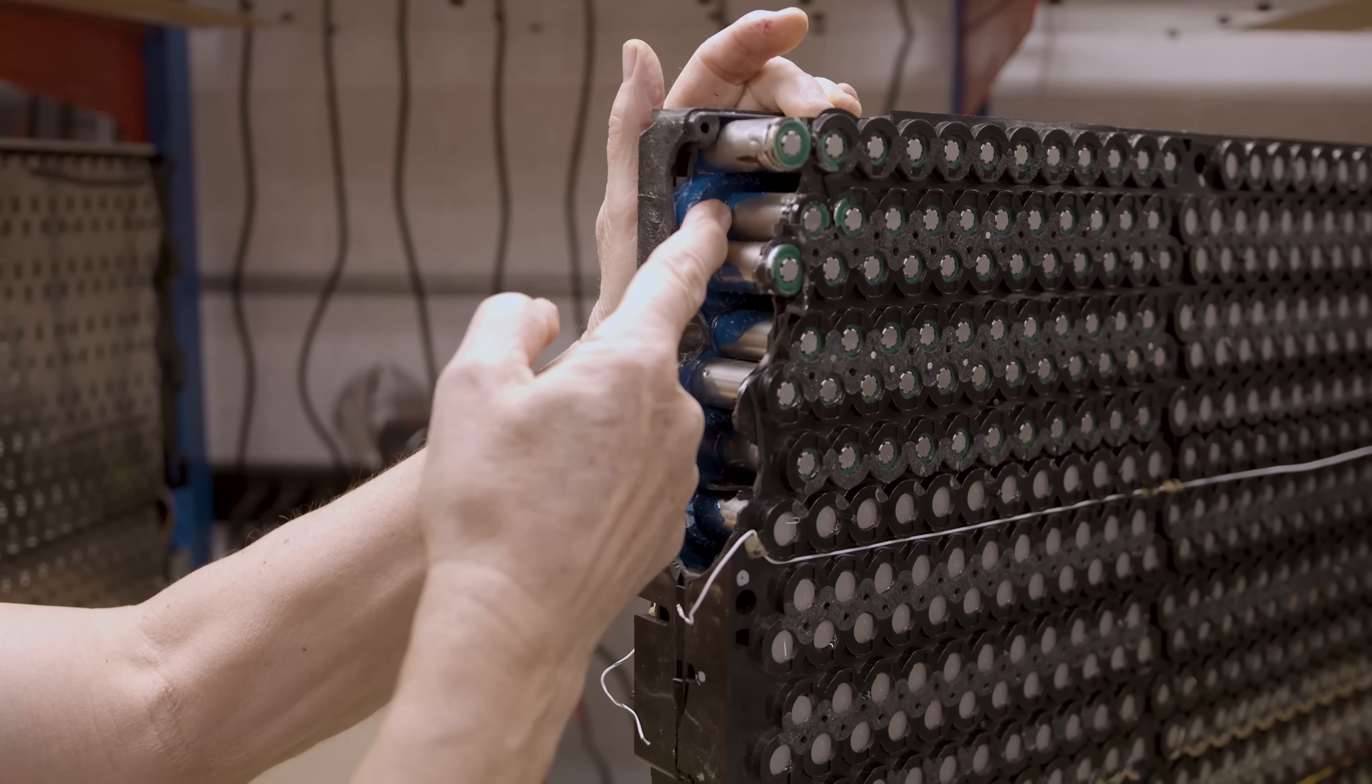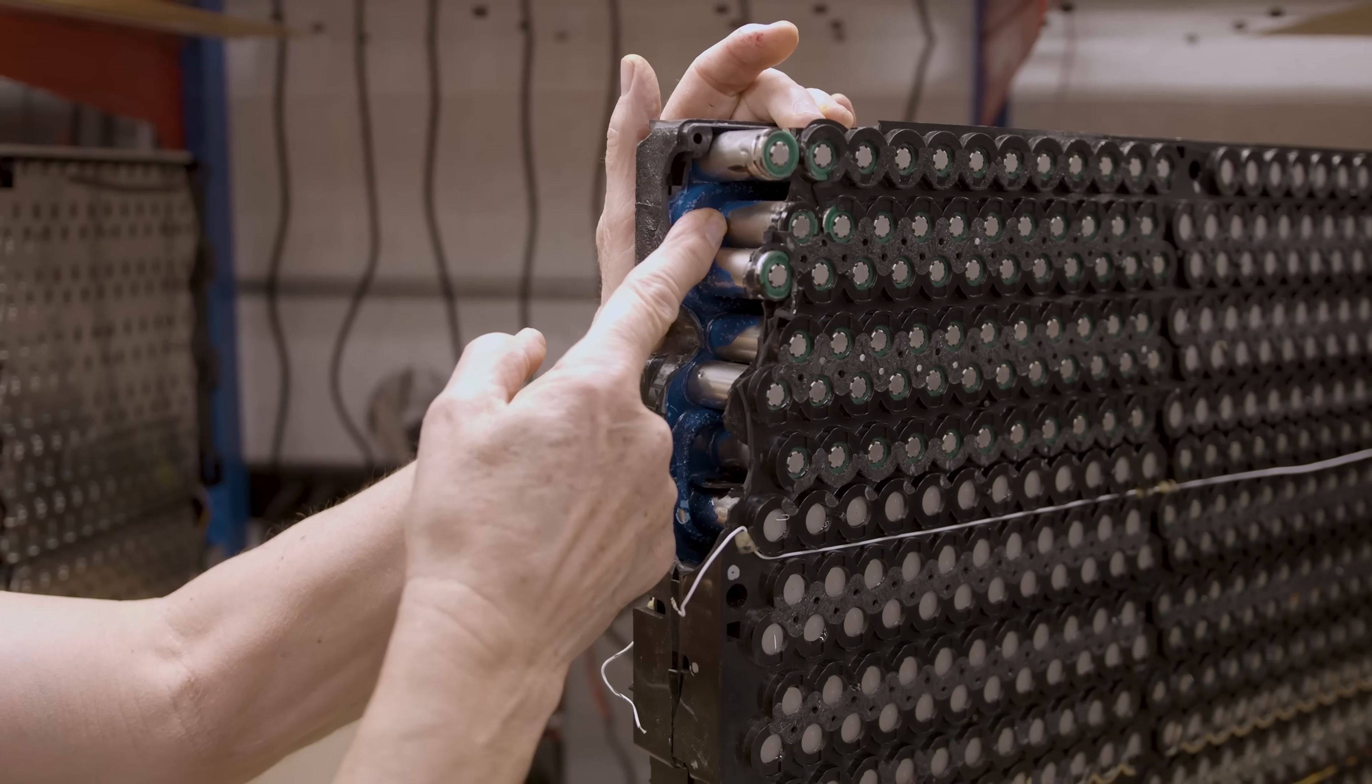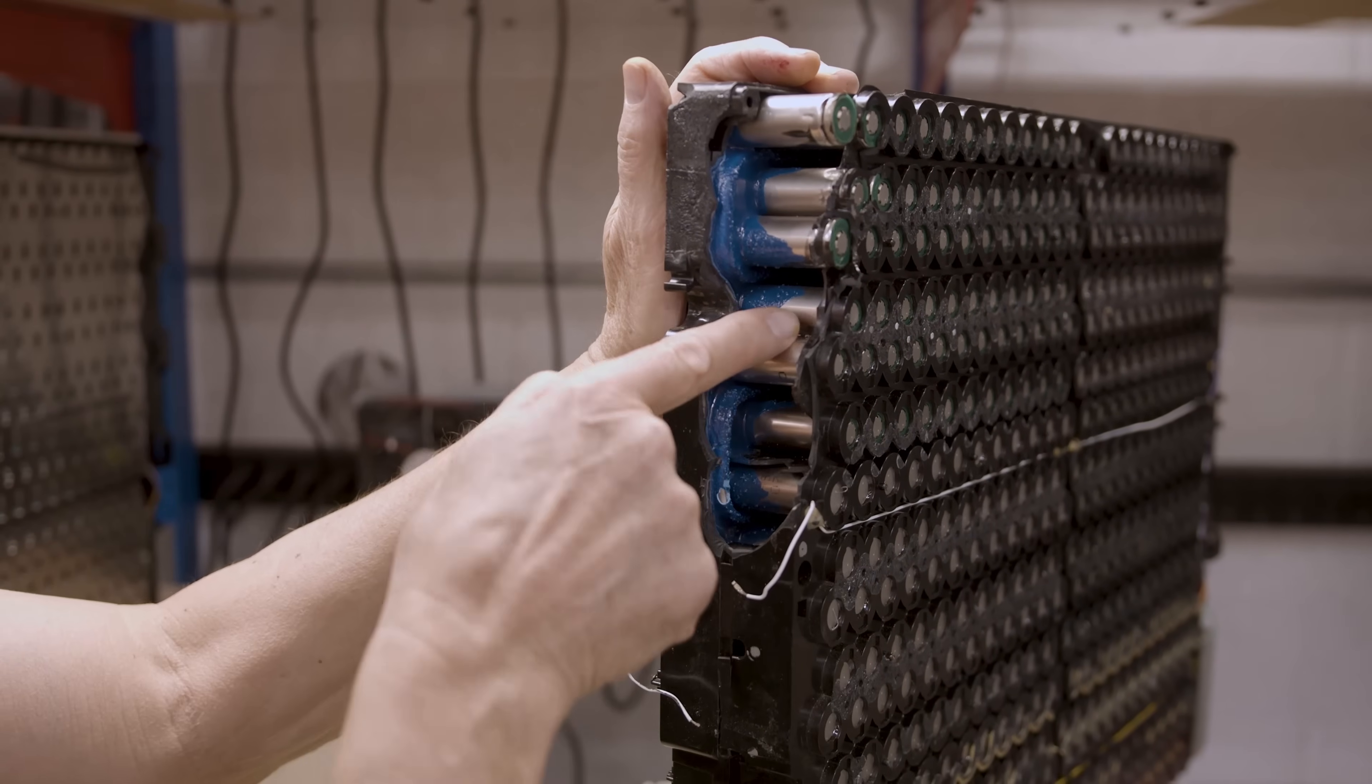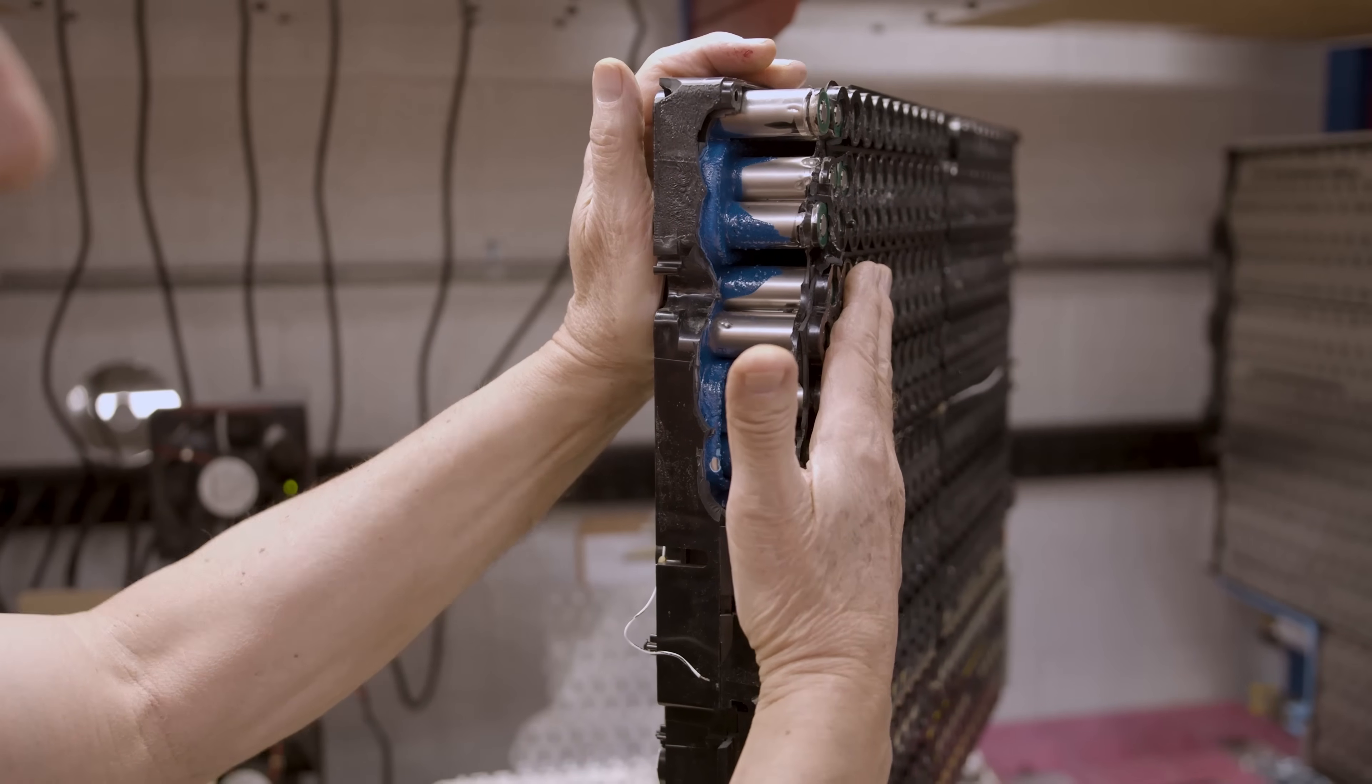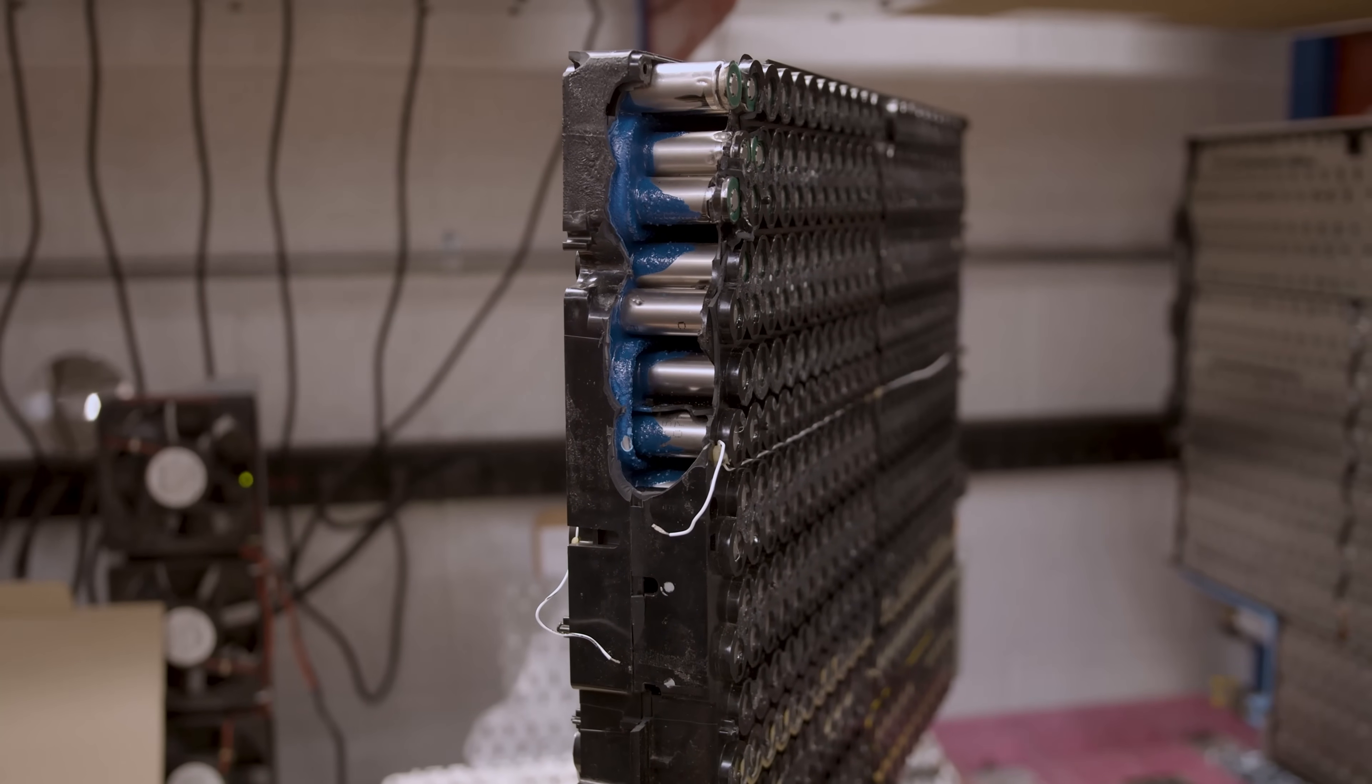And you can see the thermal potting compound is only as high as the cooling jacket itself. On the other end here, which makes it impossible to get this clamshell apart and take it off, there's actual epoxy that is holding the top of these cells to this clamshell here. So splitting this apart and opening it is virtually impossible, because you would destroy everything in between doing so.